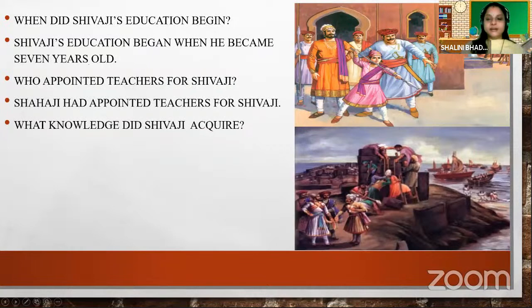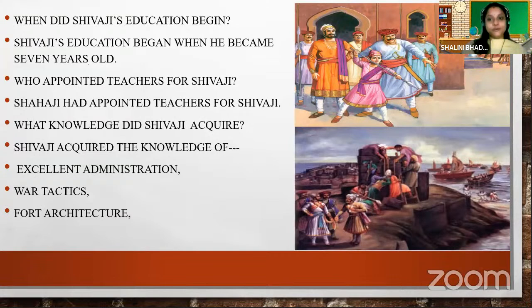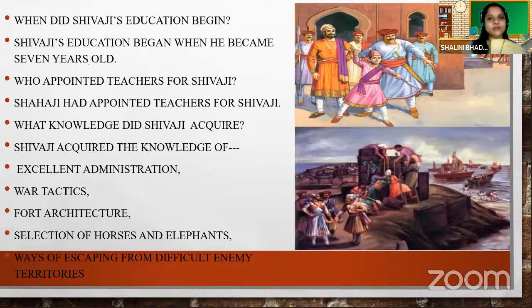He learned about swordsmanship. He learned Danputta. He learned how to find out good horses and elephants for war purposes. He acquired the knowledge of excellent administration. He also learned various war tactics. Fort architecture means how to build a fort for defence purposes. And he also learned how to select good horses and elephants for war, and different ways of escaping from enemy territories. All this knowledge was acquired by Shivaji Maharaj at a very early age.